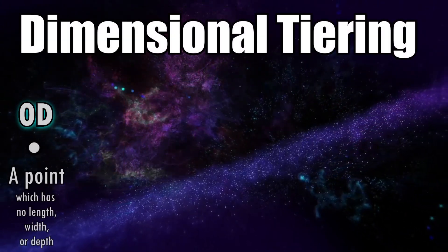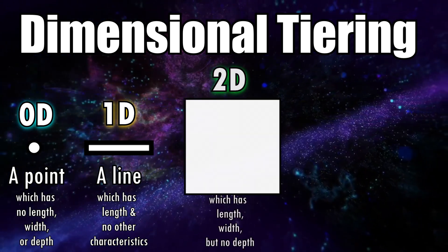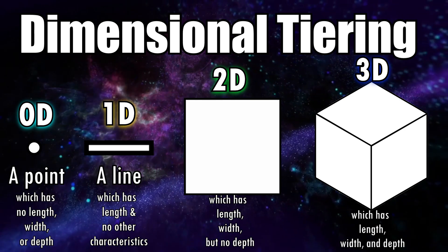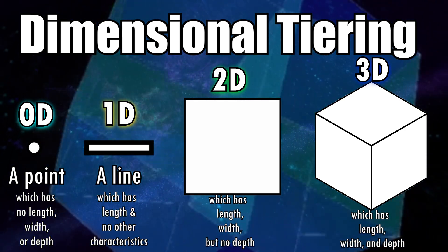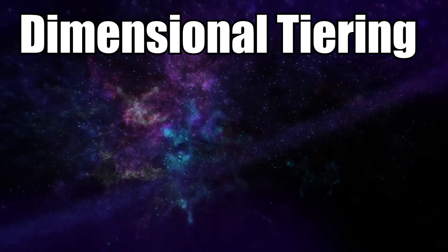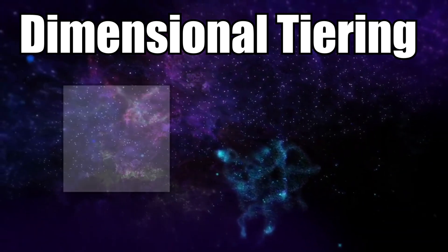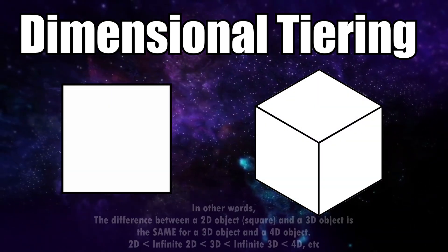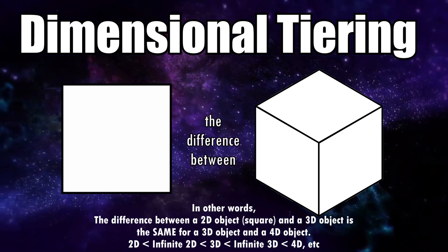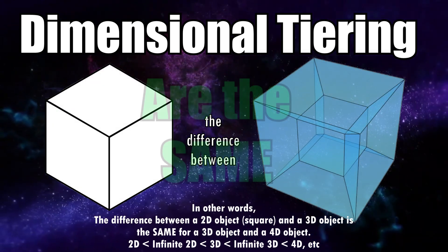A point is a zero-dimensional object. A line is a one-dimensional object. Something like a square is 2D, and something like a cube is 3D. But how do we deal with objects with more than three dimensions, and what even is a fourth-dimensional object? To start, we can look at our good old friends the square and the cube. With how many squares can be stacked into the cube — or how many zeros are needed to reach one — we need to understand that the difference between a cube and a hypercube or tesseract is exactly the same.